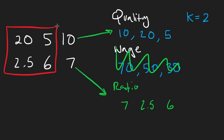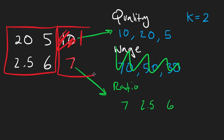But the quality here could be one, which is good because then this person only gets paid seven. Or it could be 100, which means this person gets paid a lot. So the ratio itself doesn't tell us everything.